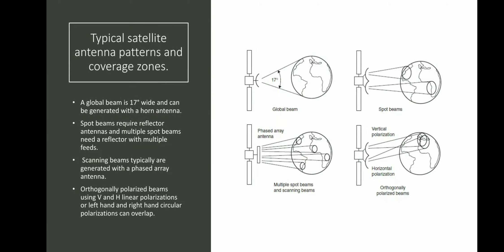Now we move to typical satellite antenna patterns and coverage zones, looking at the different patterns that satellite antennas might produce. We have global beams, spot beams, multiple spot beams, scanning beams, and orthogonally polarized beams. The global beam is 17 degrees wide and can be generated with the help of a horn antenna. A 17-degree global beam means it is going to cover the whole Earth, so that kind of wide beam can be generated with the horn antenna only.